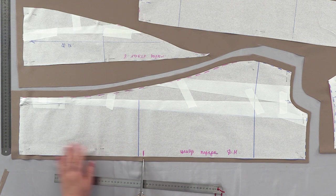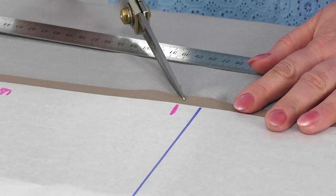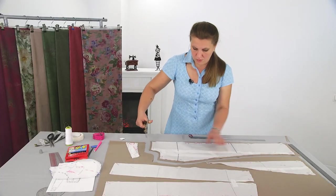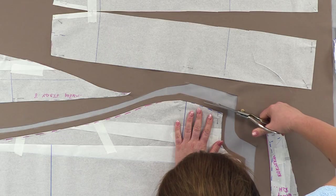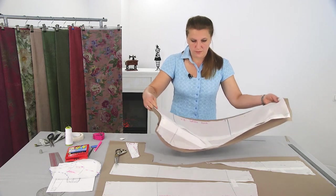Here we marked where our slit will approximately end. We can cut a little notch. And our first part is ready.